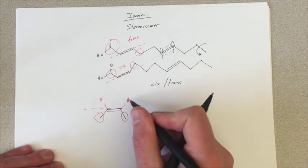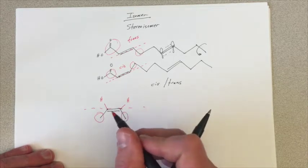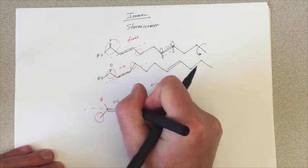This carbon, the methyl group is more interesting than that hydrogen. Both of these interesting things are on the same side of the double bond and therefore this would be a cis molecule.